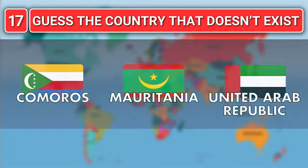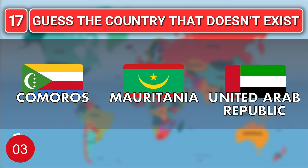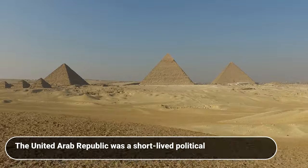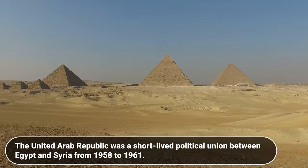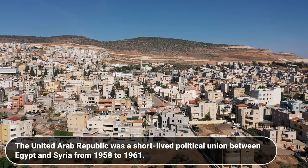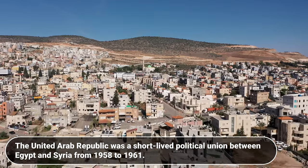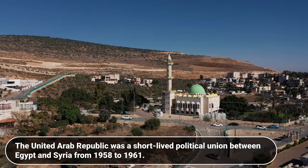Guess the country that doesn't exist? Comoros, Mauritania or United Arab Republic? The United Arab Republic was a short-lived political union between Egypt and Syria from 1958 to 1961.